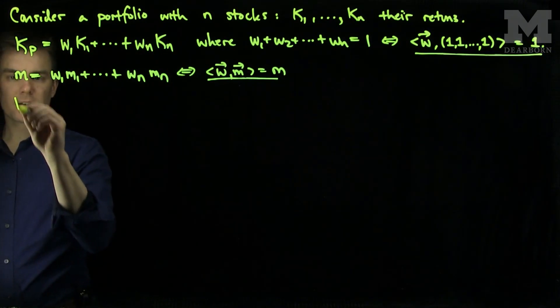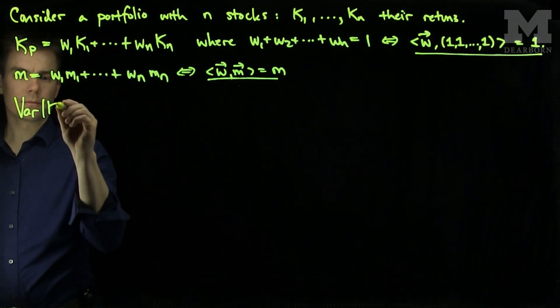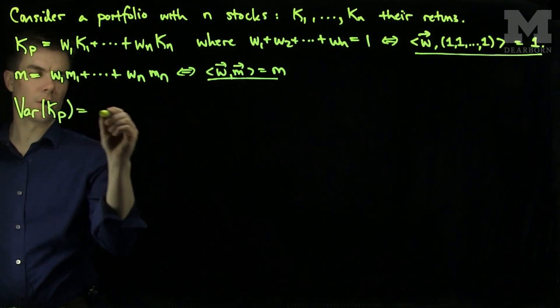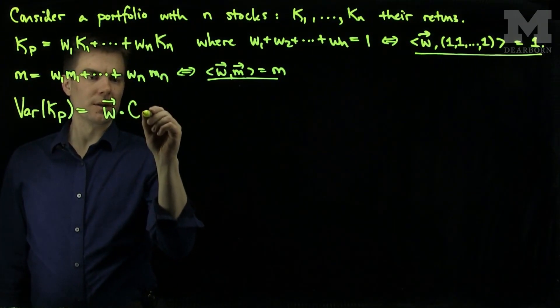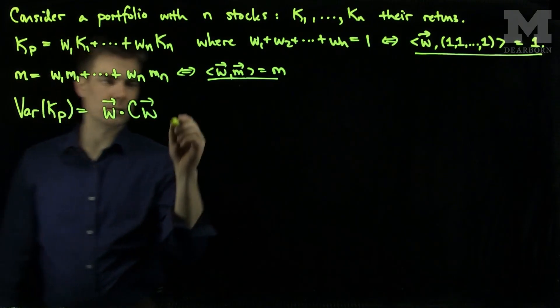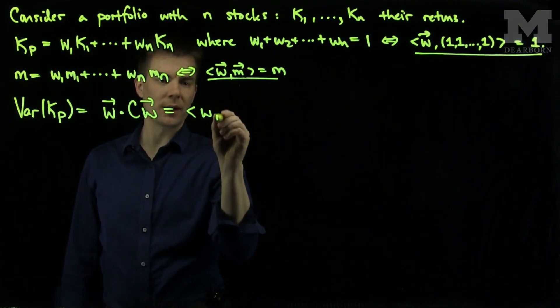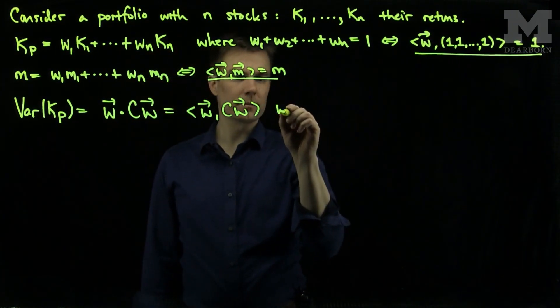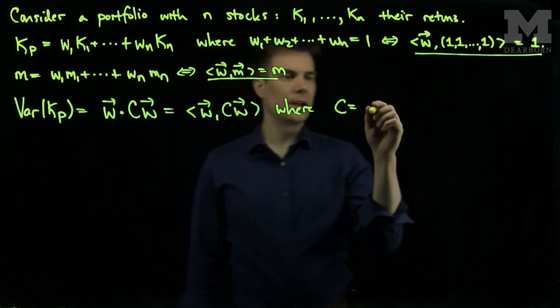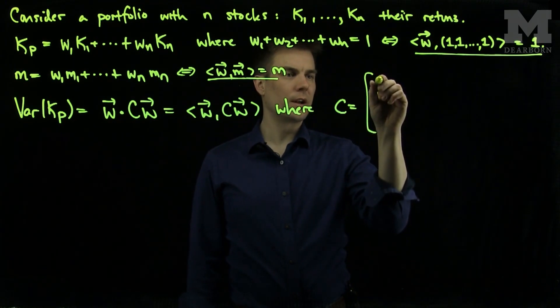Now, I can find what the risk is. I can find the variance of my portfolio. The variance of my portfolio has the form w dot product or inner product Cw, which is the same thing as we've been writing as w transpose Cw, where C is the matrix of covariances.